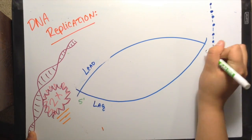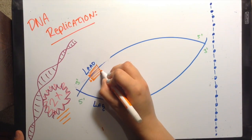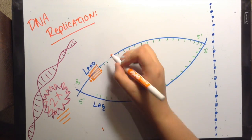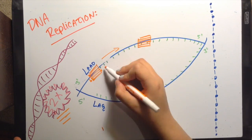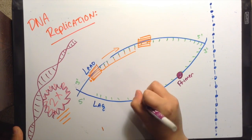Both strands replicate at the same time, but one is continuous, the leading strand, while the other is not, the lagging strand. The leading strand is 3 prime to 5 prime and new nucleotides are added to the 3 prime end continuously. The lagging strand is 5 prime to 3 prime oriented and replicates in segments.